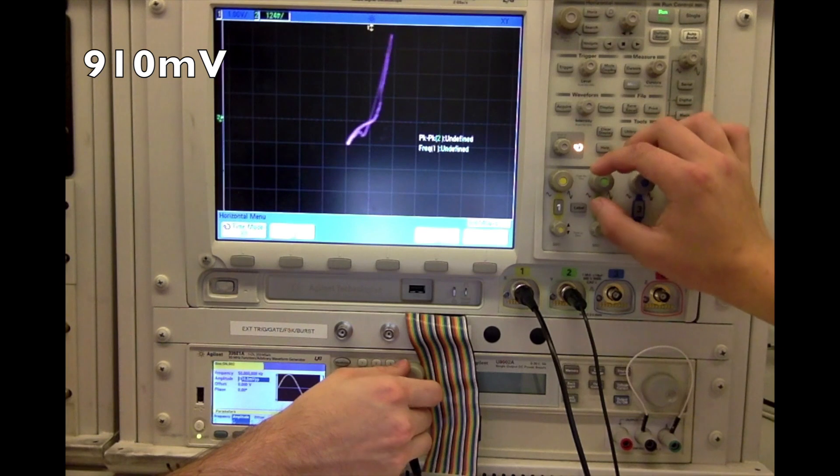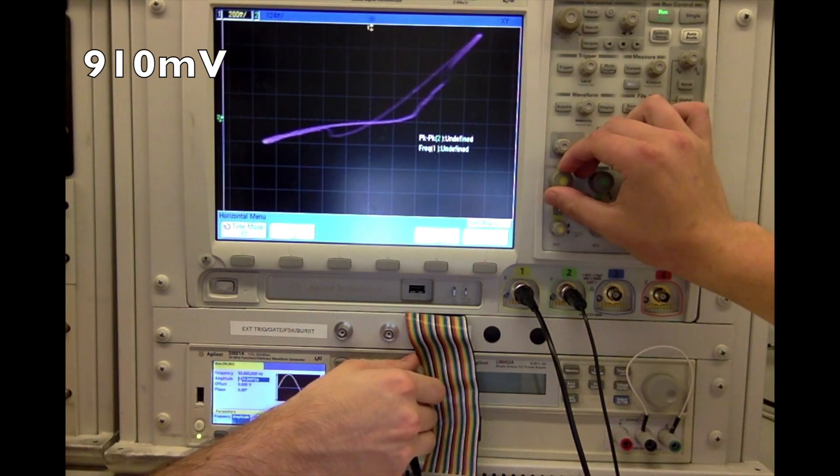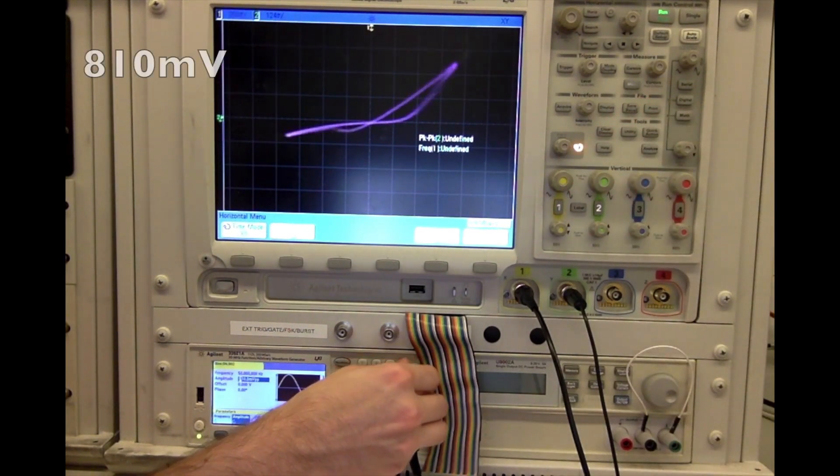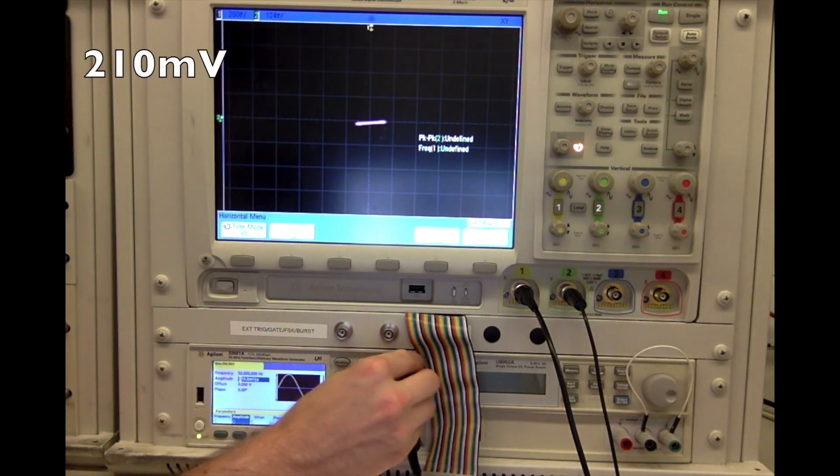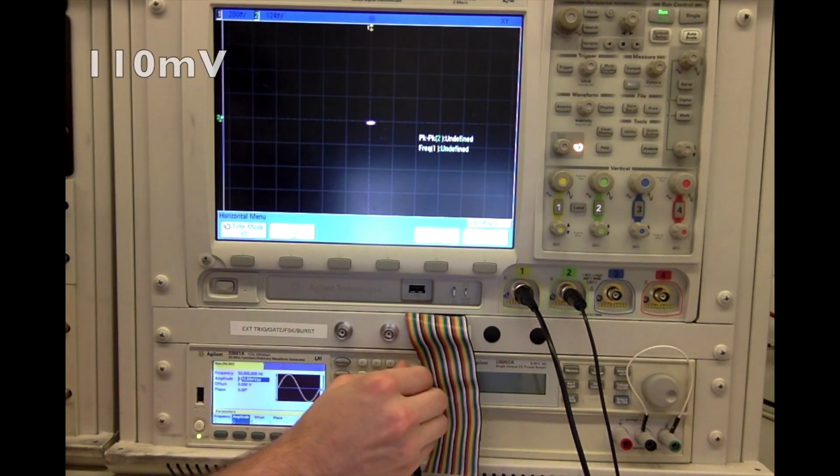So what we'll do is, we're at 910 millivolts. Once we see the hysteresis loop, we'll go back down to 250, and then we'll go back up.